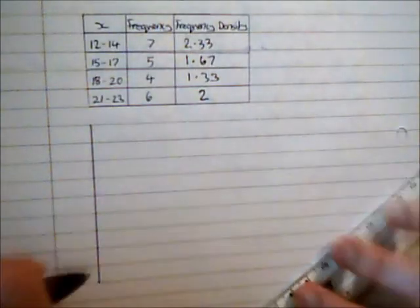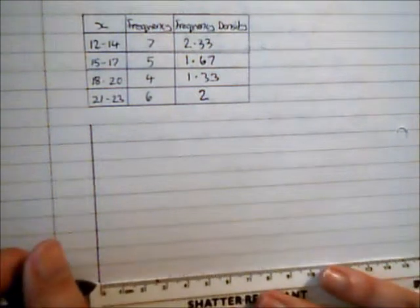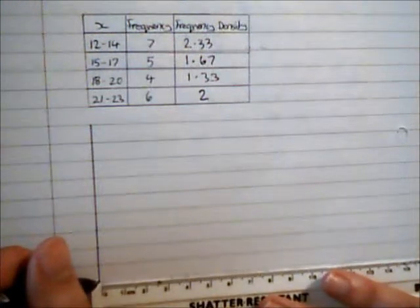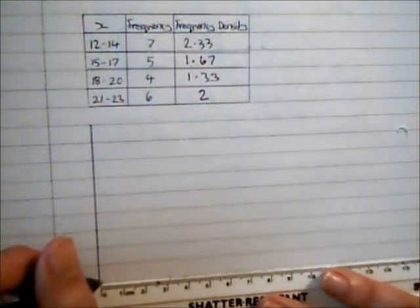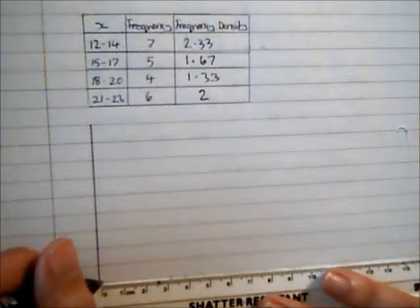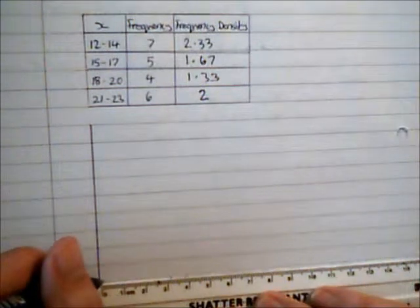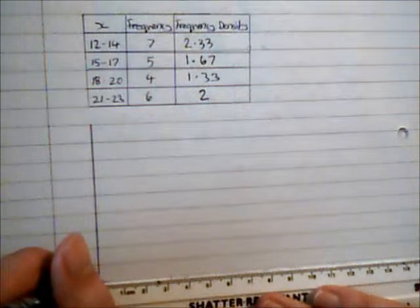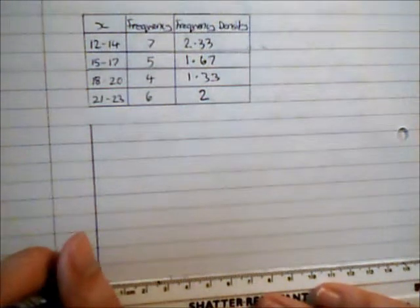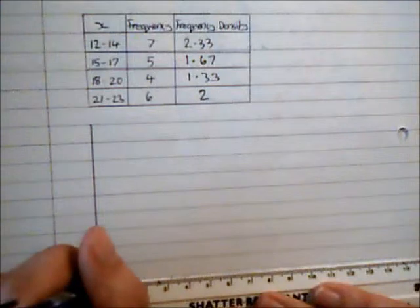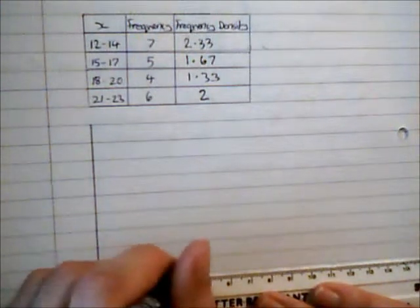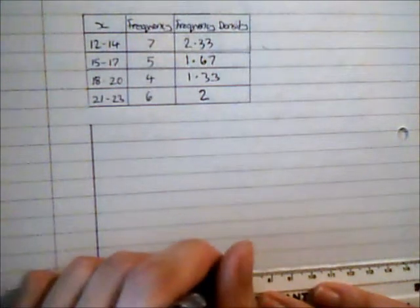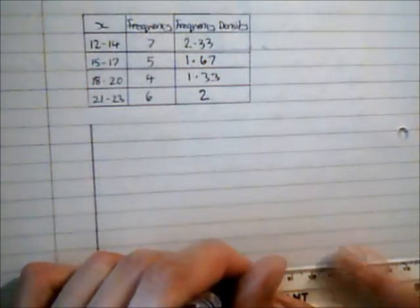So along the bottom here I don't need to start at 0 because my first value is actually at 11.5, so what I'm going to do is I'm going to assume that this is 11, and I'm going to go 13, 15, 17, 19, 21, 23 plus a little bit more there.